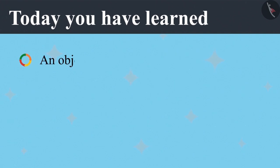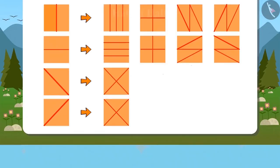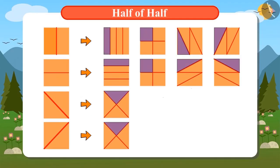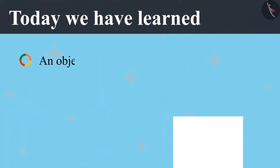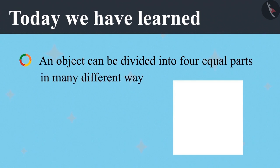Today you have learned: an object can be divided into four equal parts in many different ways. Vandana divided a square-shaped figure into eight one-fourth parts. You can also take a square-shaped paper and observe the number of ways you can find to divide it into four equal parts.